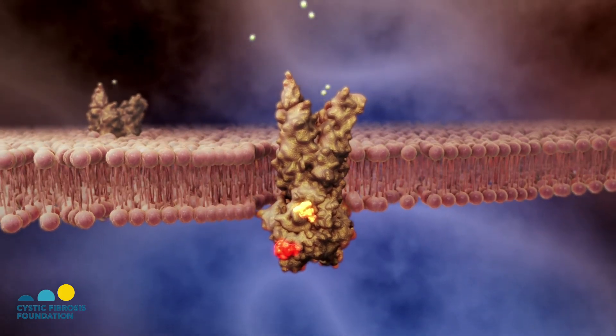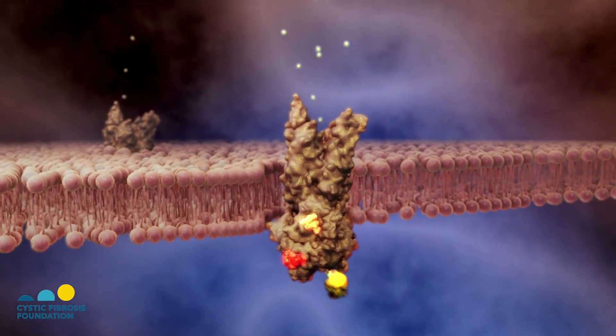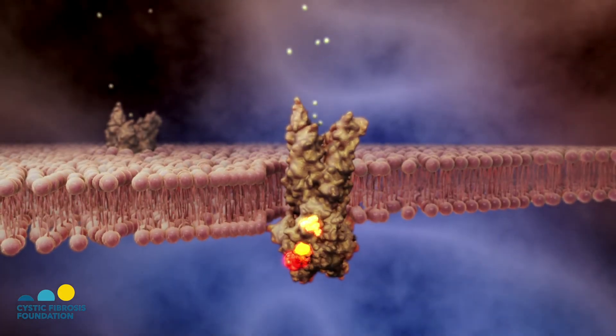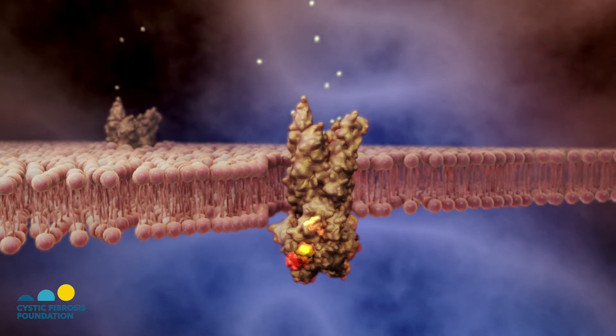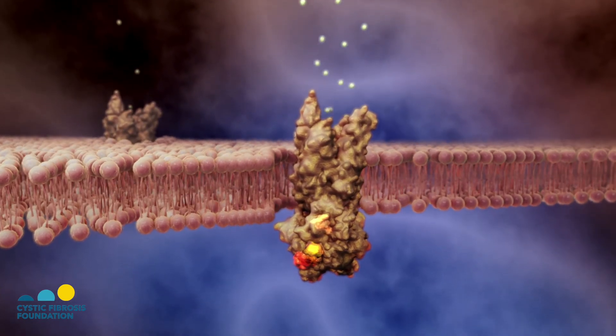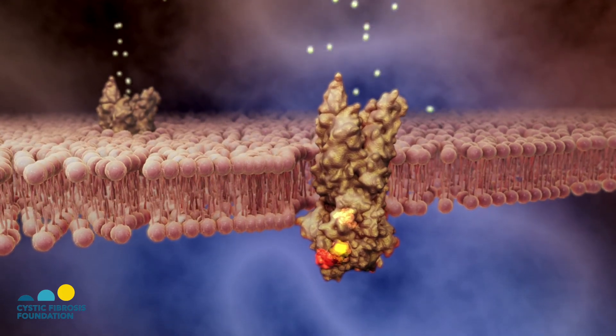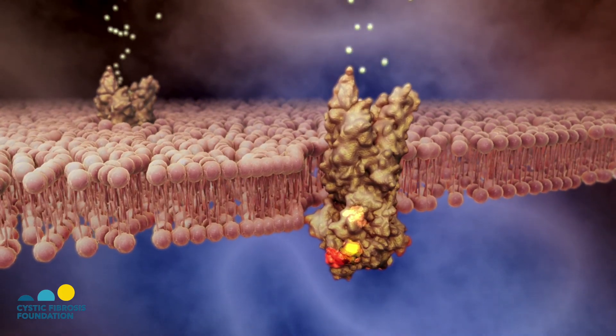Once the corrector-treated CFTR reaches the cell surface, another drug known as a potentiator can be used to bind to the protein and further open the chloride channel. The first FDA-approved potentiator drug was Ivacaftor. Through corrector and potentiator drugs, the CFTR channel is now able to better function and restore a healthy balance of liquid on the airway surface.